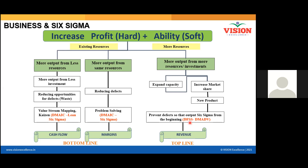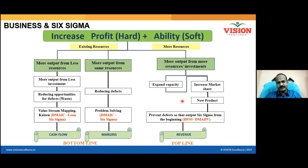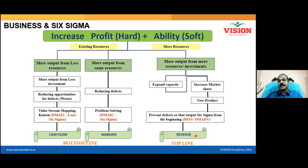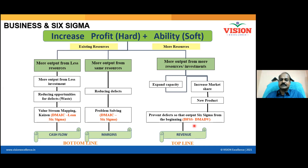With DFSS, products are designed so that outputs are free from defects and straight away at Six Sigma level. So there are three approaches: Six Sigma (DMAIC), Lean Six Sigma, and Design for Six Sigma (DFSS). If your focus is on bottom line improvement, use DMAIC or Lean Six Sigma projects. If your focus is on top line growth, run a DFSS project.